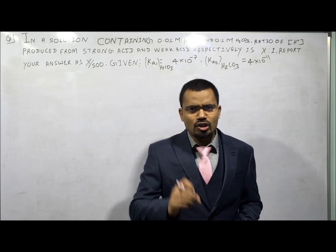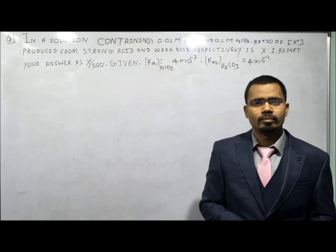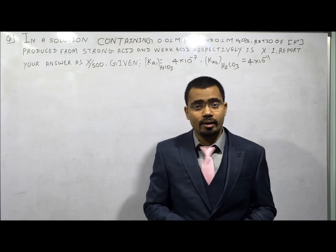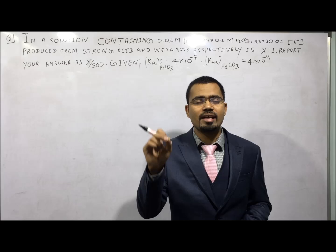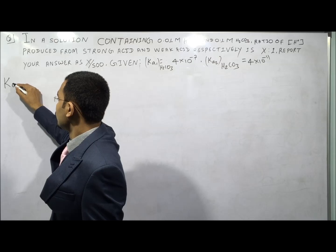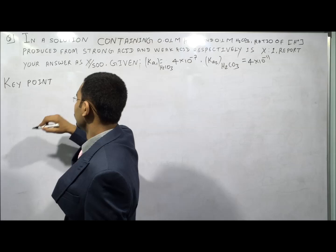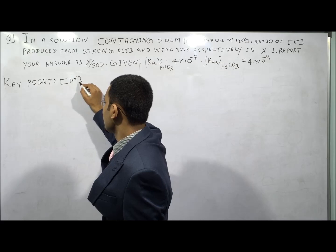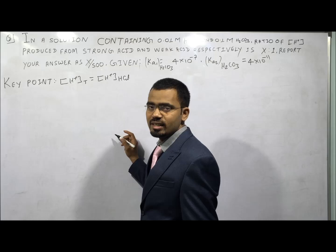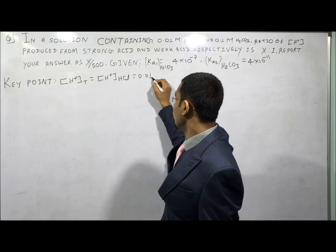The dissociation of the weak polyprotic acid is suppressed by the strong acid. Therefore, H⁺ can be calculated by taking the H⁺ from the strong acid only. The key point is: total H⁺ concentration will be from the strong acid only — for HCl only — which is equal to 0.01 M.